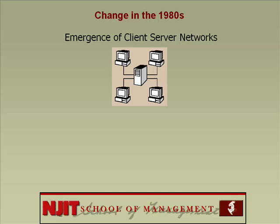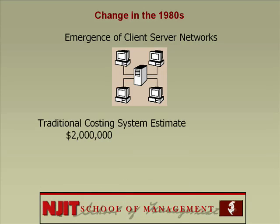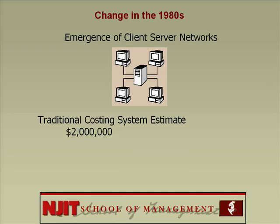Assume the accountant came up with an estimate of $2 million. The managers would decide that it was acceptable since it was within their budget. They would then go ahead and implement the system. The problem was that in most cases the accountant got it wrong. The actual cost turned out to be more than triple. Let's assume the actual cost was around $10 million — so you spent $8 million more than anticipated.